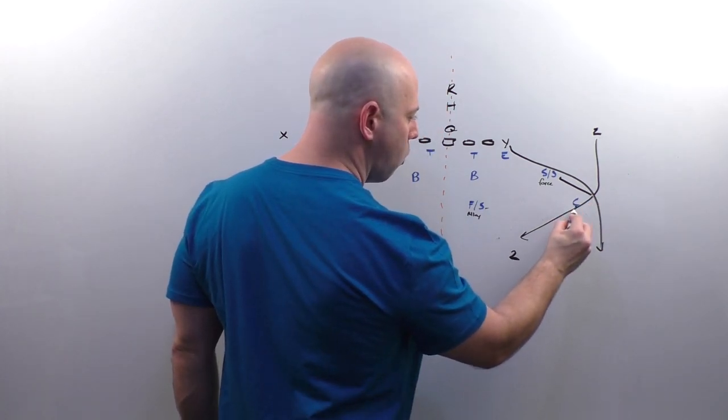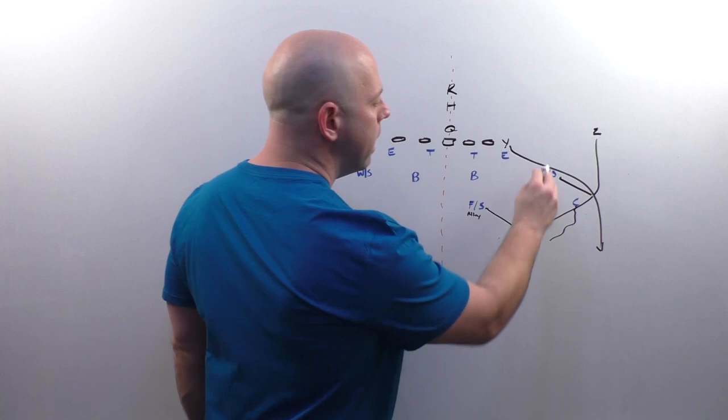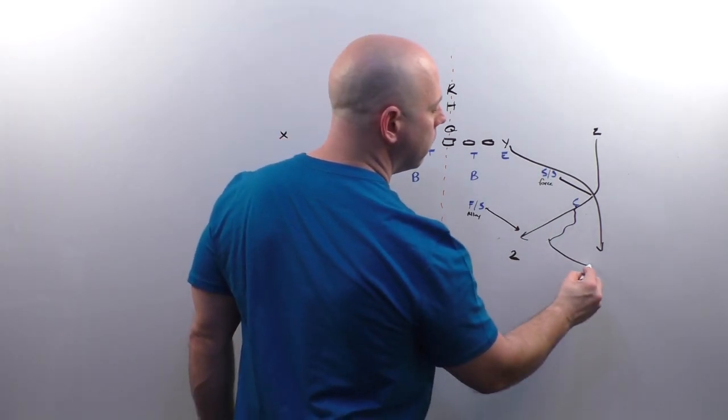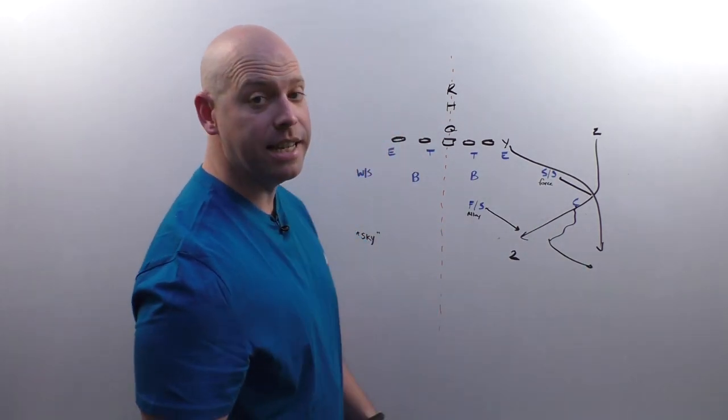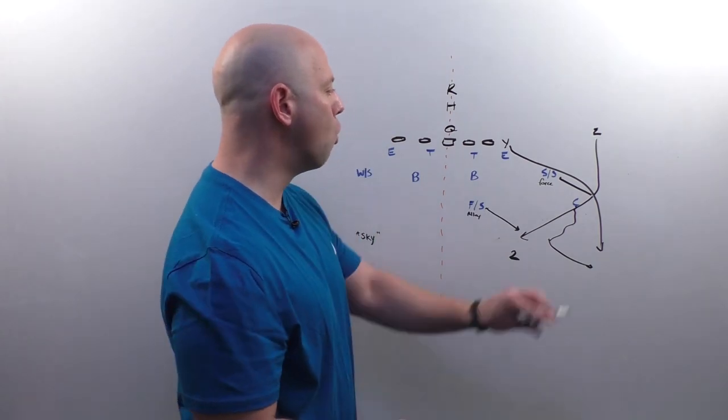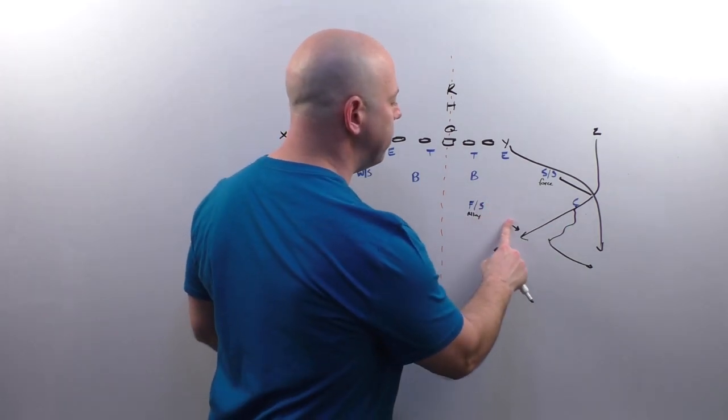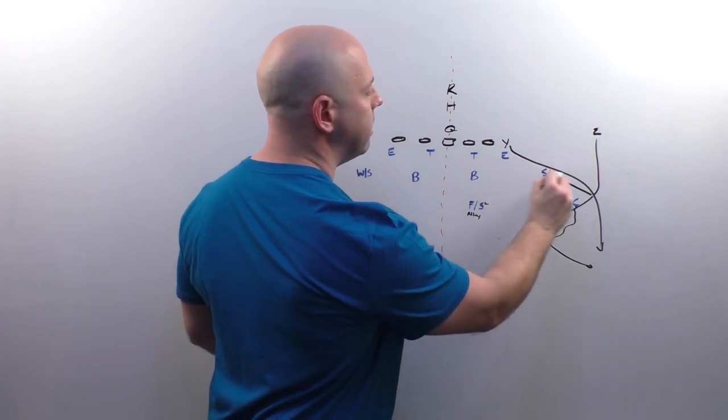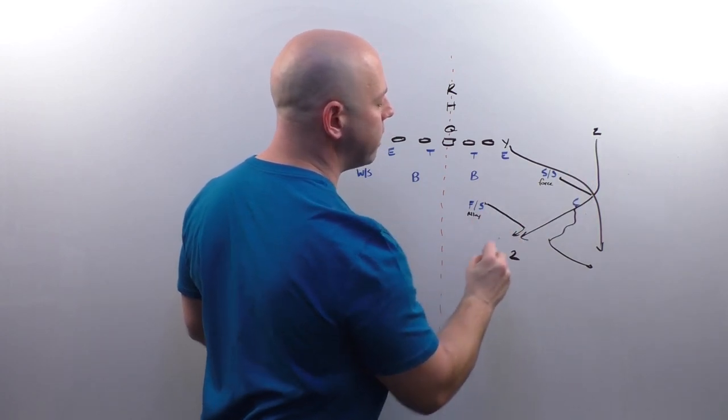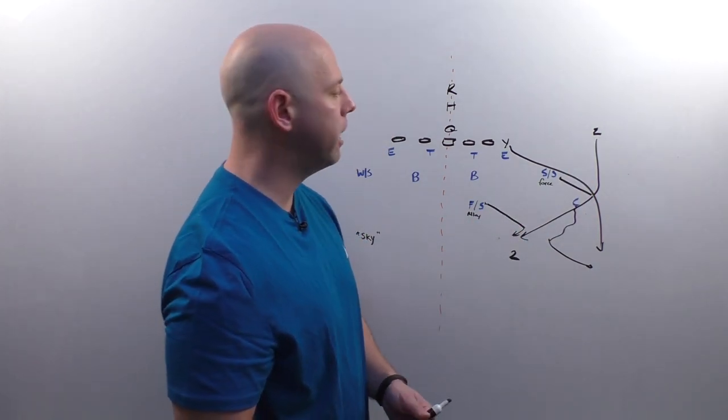And come back because he's that deep half player. So the corner will end up with the wheel. The free safety would bounce. See, he's got an out by number two. Now he goes to rob and match that post, and he's going to pick the post up there. And we'll take over the post with the wheel.